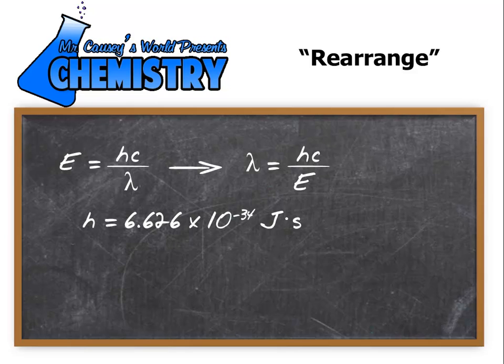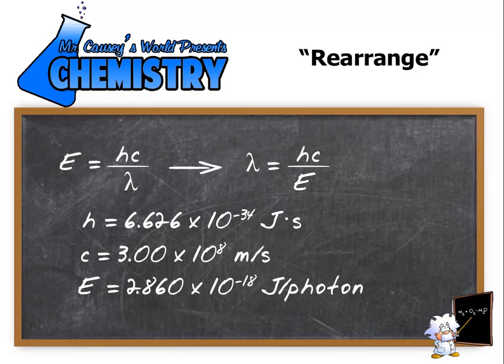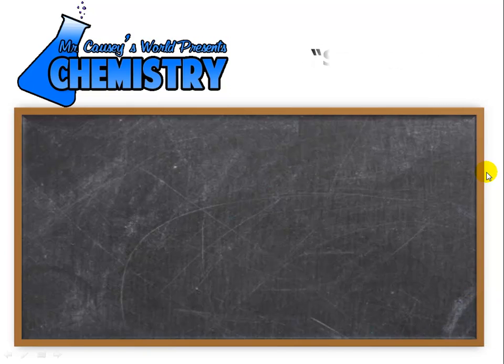So let's write down what Planck's constant is, and the speed of light, and the energy from the problem. They told us how much energy there was per photon. With this information now we can put it into our equation here. Let's go to the blackboard again.